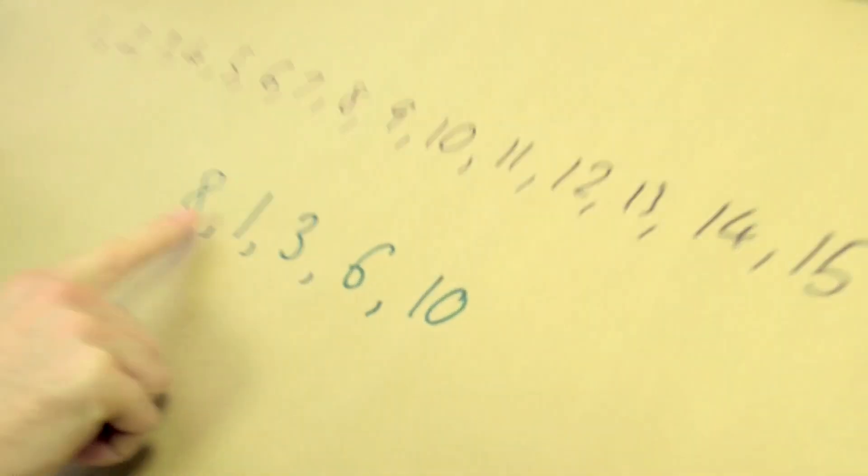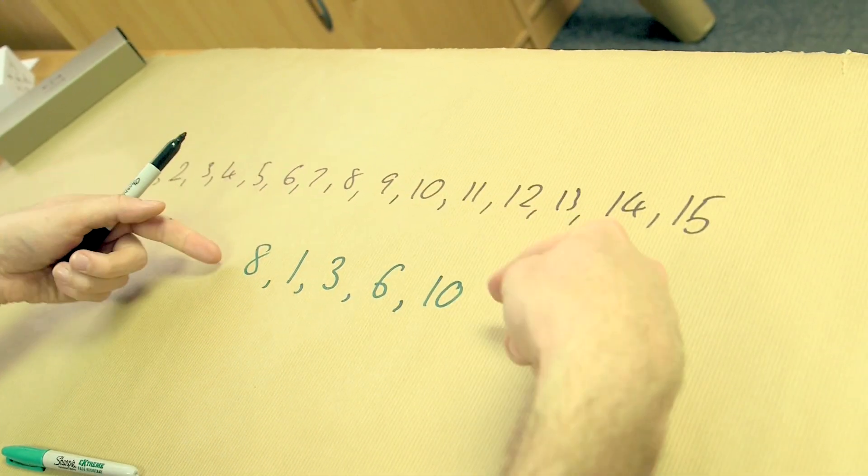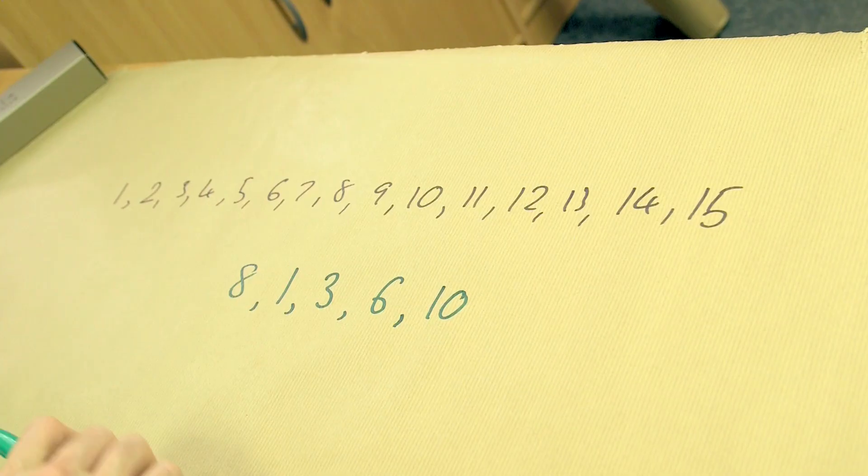I want people to work it out for themselves, but why doesn't it work? Right, because this does fulfill the requirement. Every two of these do add to give you a square number, but then you can't join up the rest of them. You run out of room.